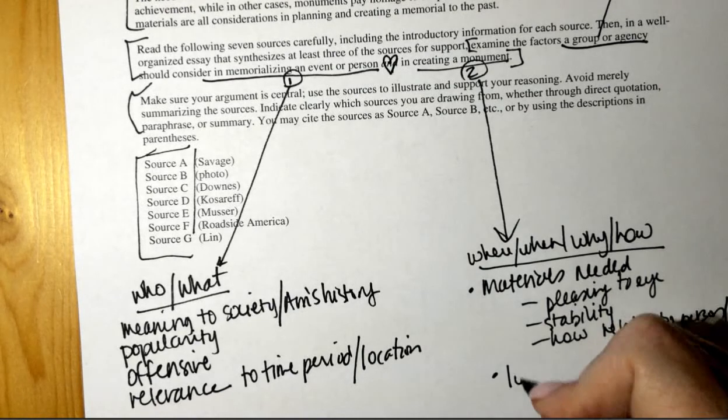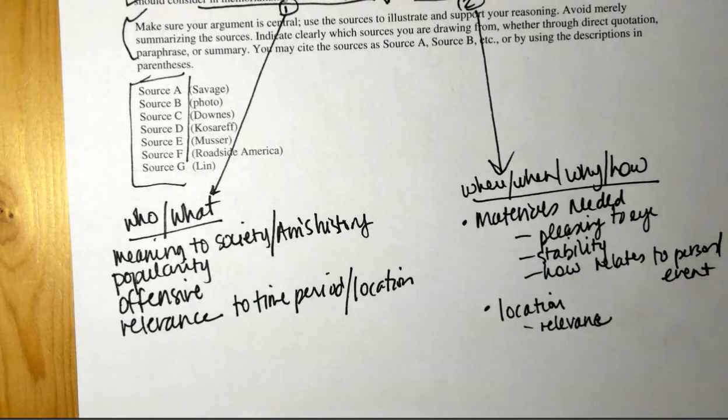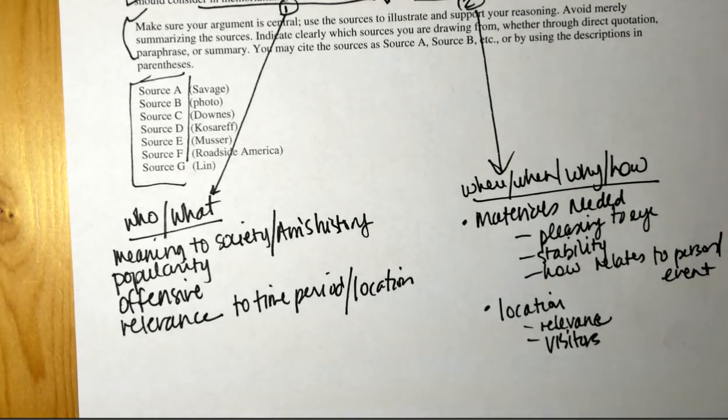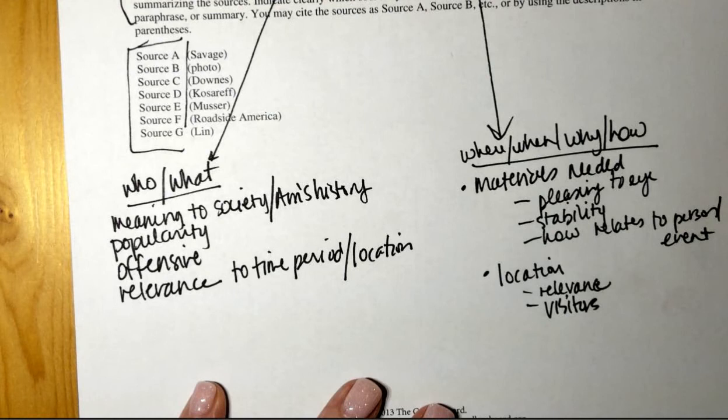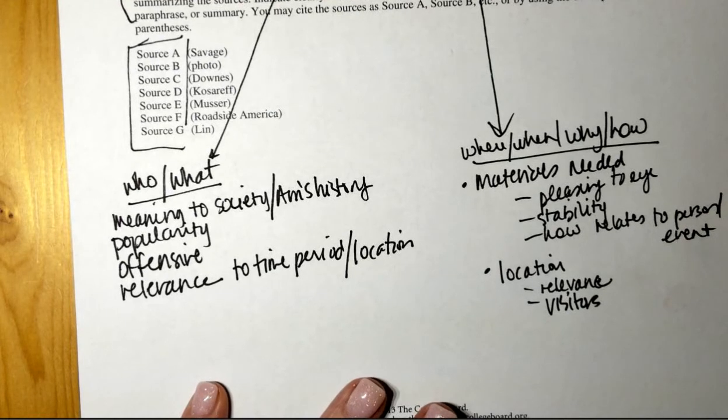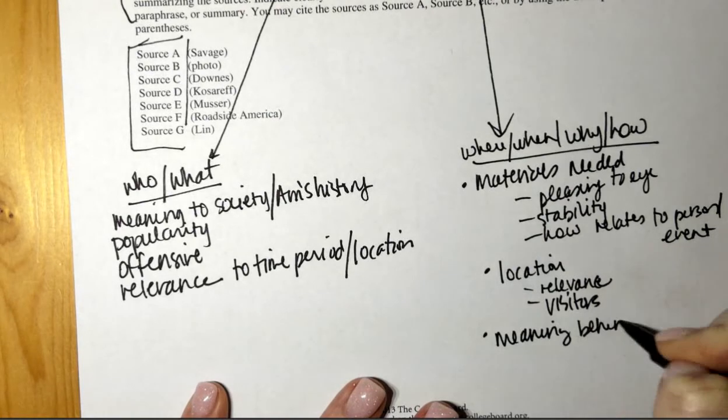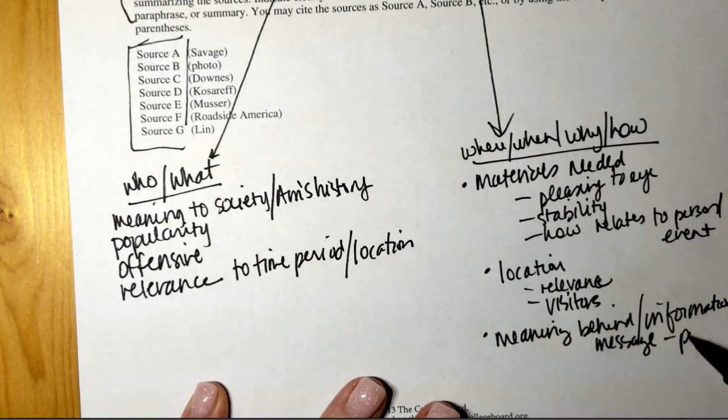What else do we need to consider materials needed what else. Okay why is location important. So relevance again to that person or event right what else does location why does location matter. Do what. Yeah get, yeah are people already coming there or will it be something that brings people to this event or to this place right. What else must we consider. Well and I think that's what you're like the idea of like the information or the message right so like what do you want to portray. What else is important.